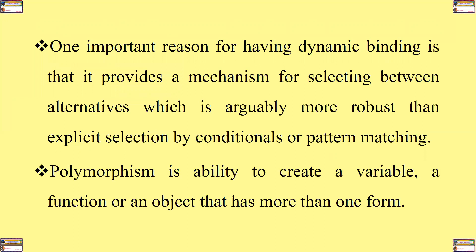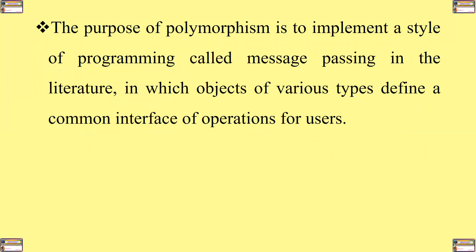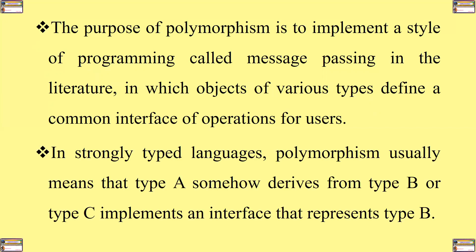Polymorphism can therefore be seen as the ability to create a variable, a function, or an object that has more than one form. The purpose of polymorphism is to implement a style of programming called message passing, in which objects of various types define a common interface of operations for users. In strongly typed languages, polymorphism usually means that type A derives from type B, or type C implements an interface that represents type B.